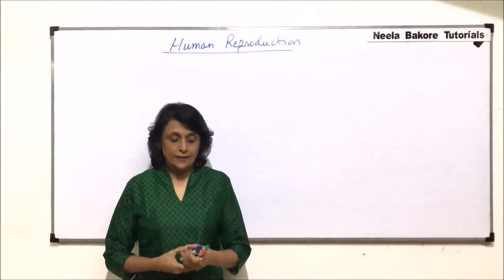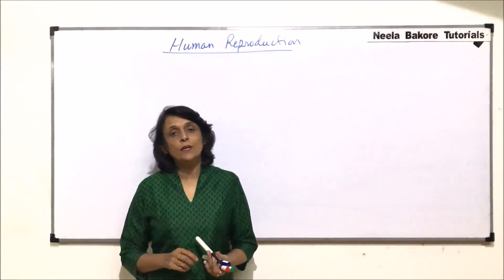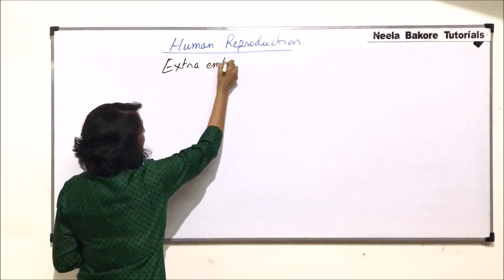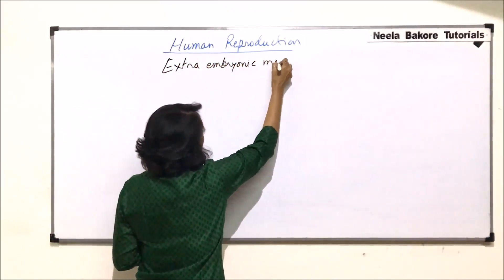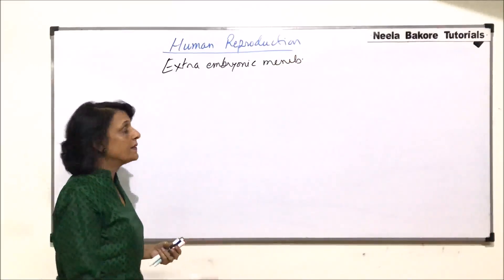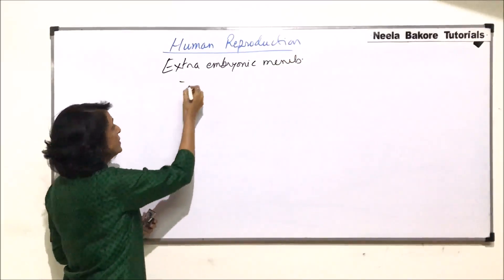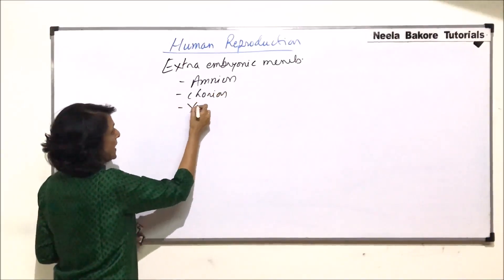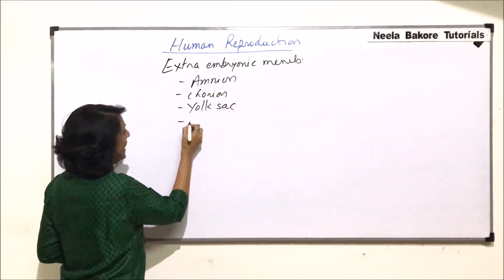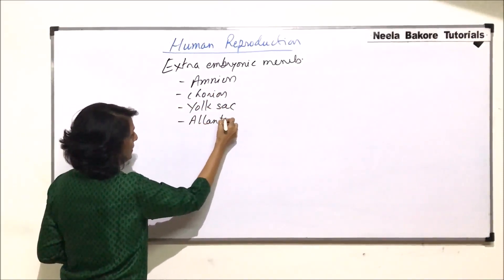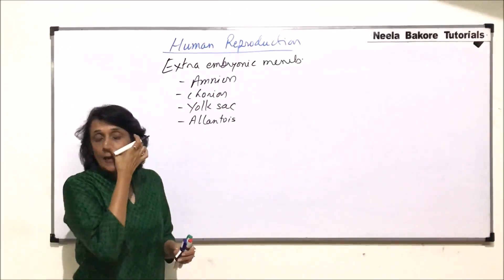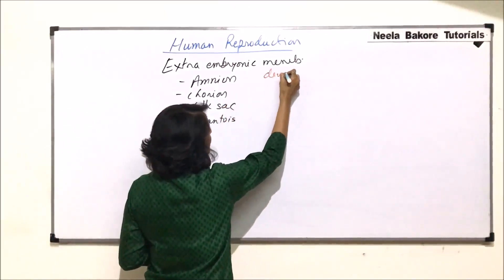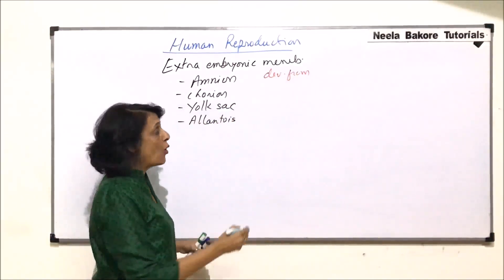In this video, we will talk about the extra-embryonic membranes, how they are formed and their functions. These extra-embryonic membranes, they are four. Let us write down their names: amnion, chorion, yolk sac, and allantois. These are the four extra-embryonic membranes and they develop from trophoblast or trophoectoderm.